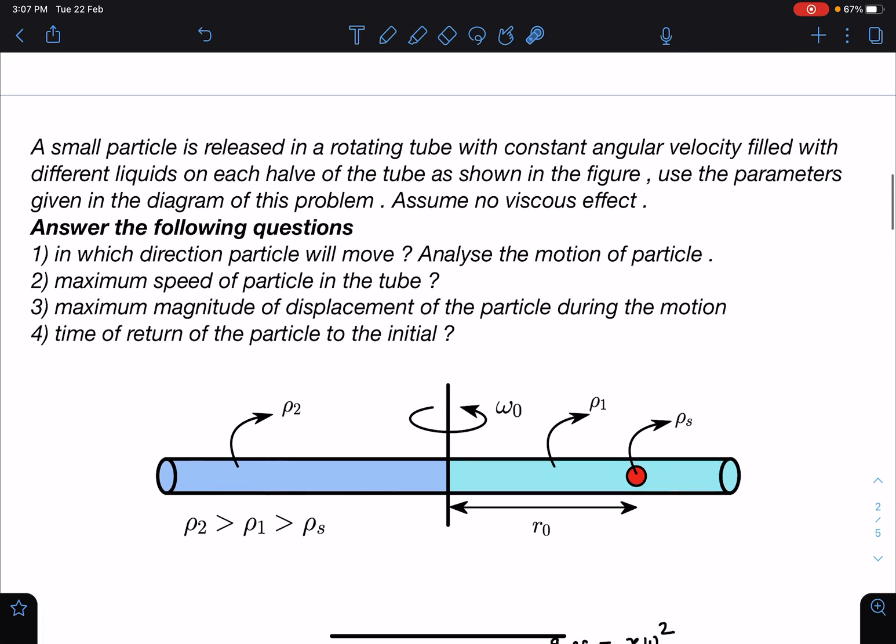A small particle is released in a rotating tube with constant angular velocity filled with different liquids on each half of the tube as shown in the figure. Use the parameters given in the diagram of this problem, assume no viscous effect. Here there is a solid sphere of density rho s, and this side liquid is rho 1 and this side liquid is rho 2, and it is moving with constant angular velocity of omega naught and initial distance of release from the axis is R naught.